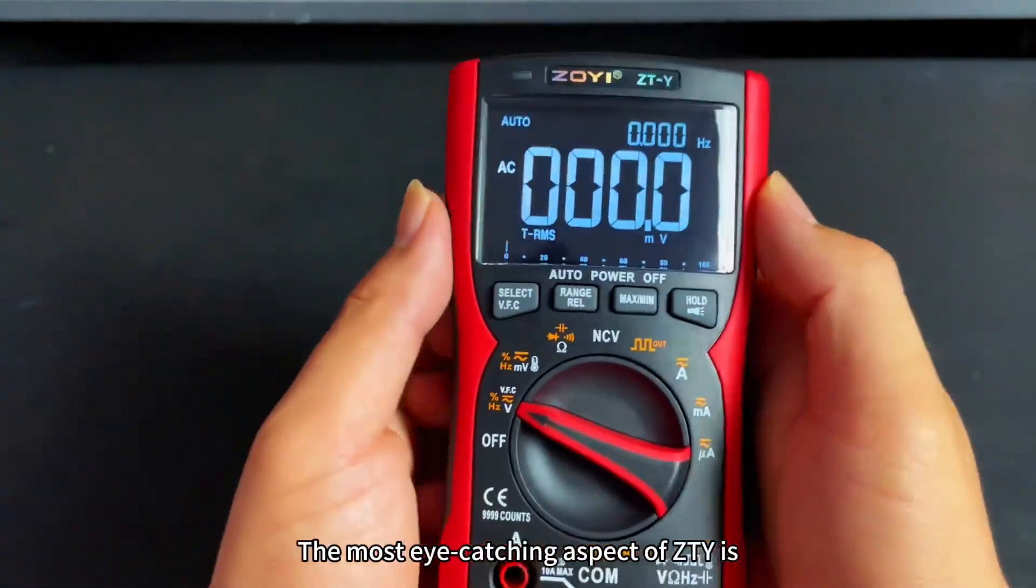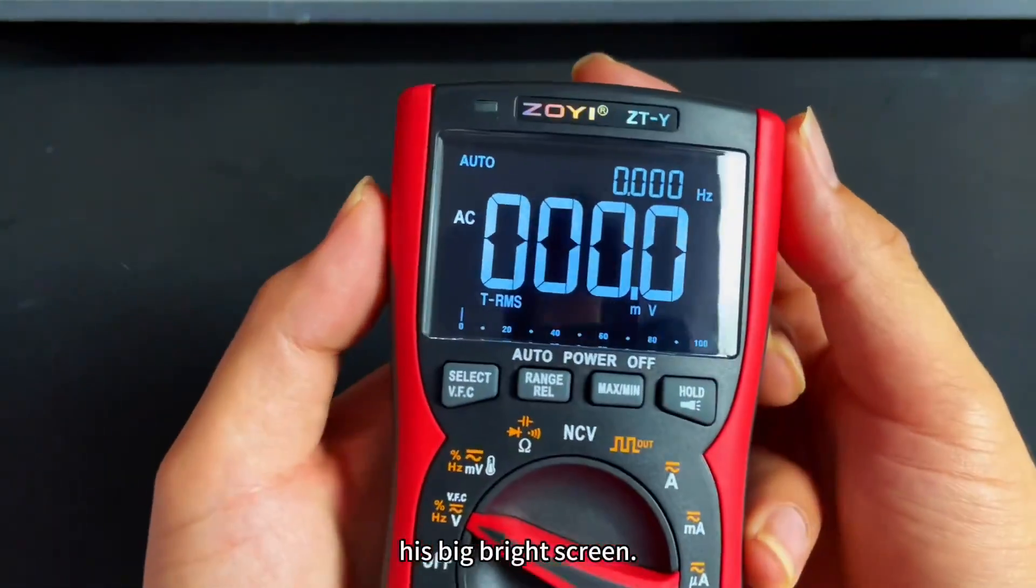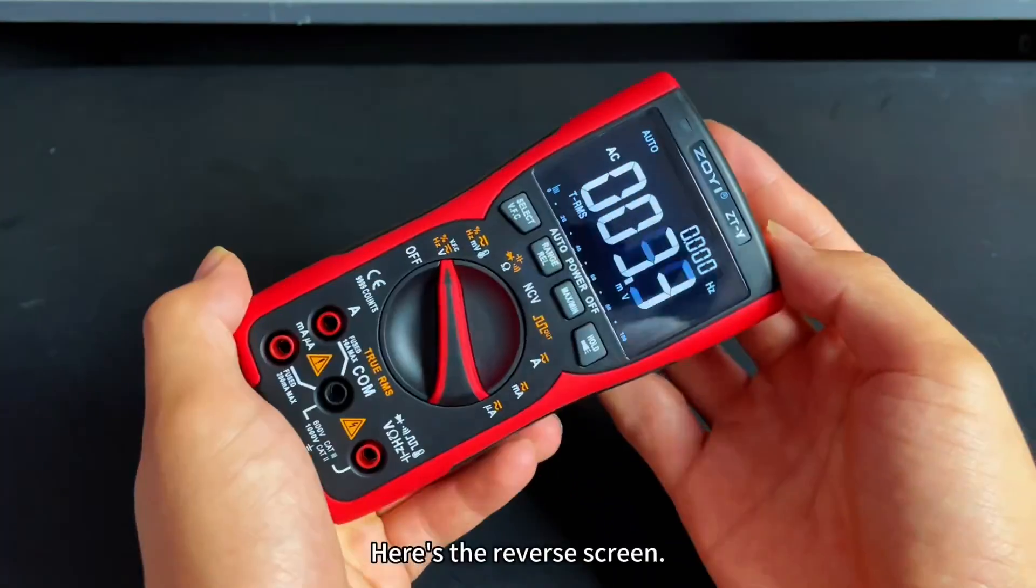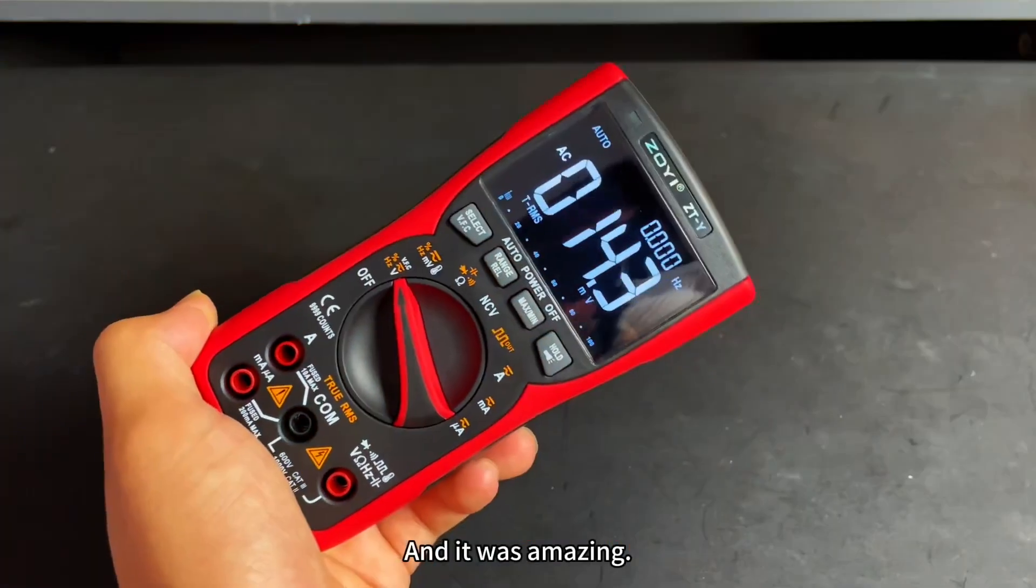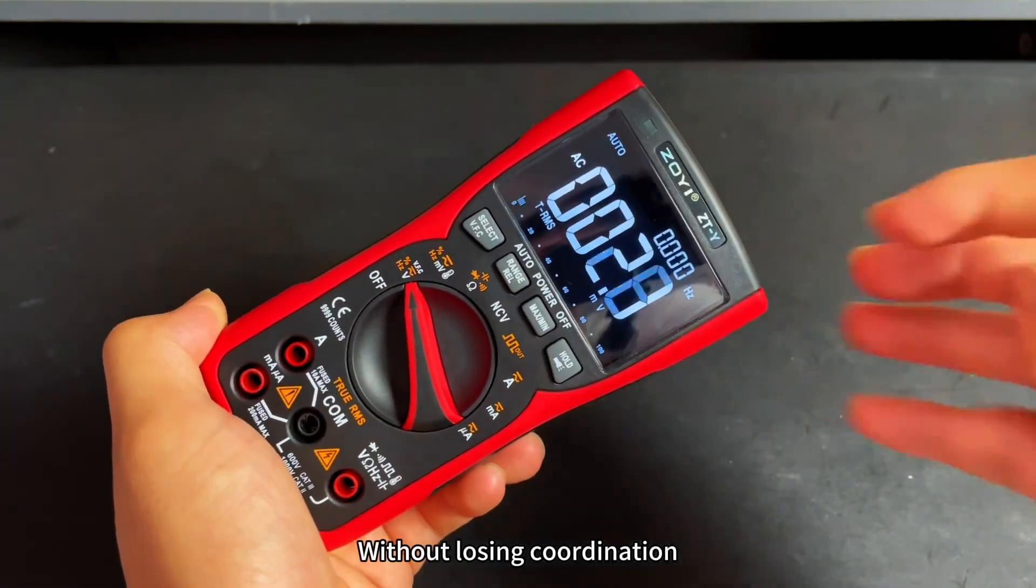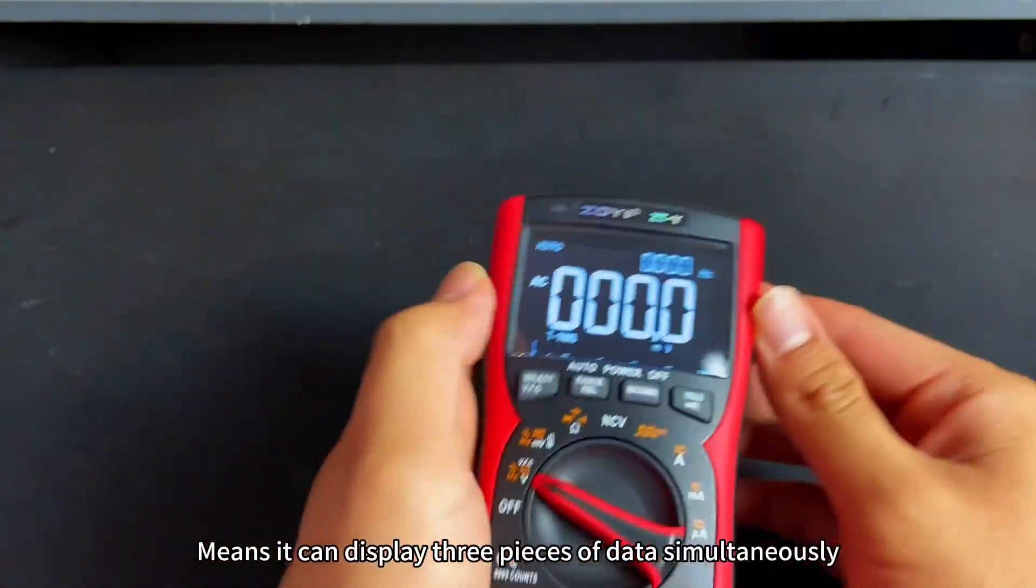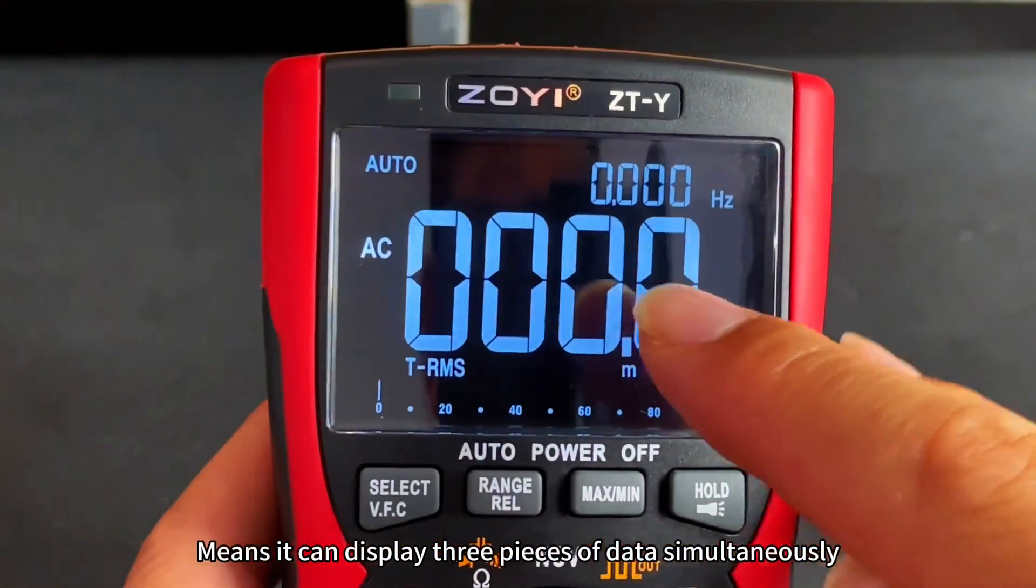The most eye-catching aspect of ZTY is this big bright screen on the front of the meter. It's a reverse screen and it's amazing. It's a 3-screen design, which means it can display 3 pieces of data simultaneously.